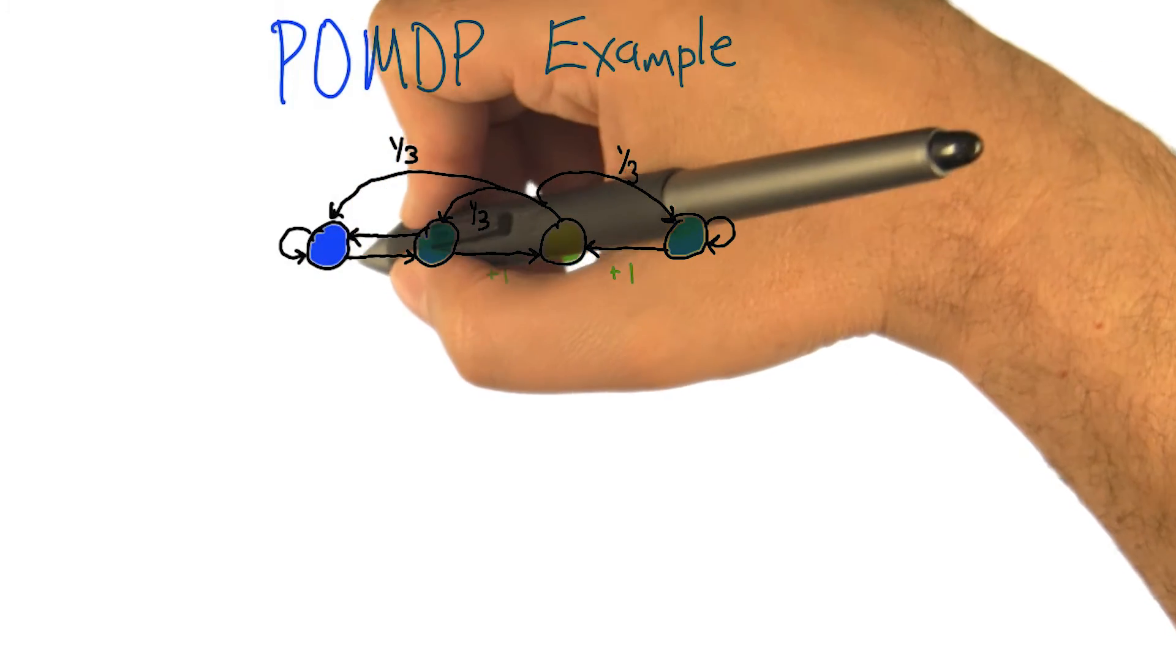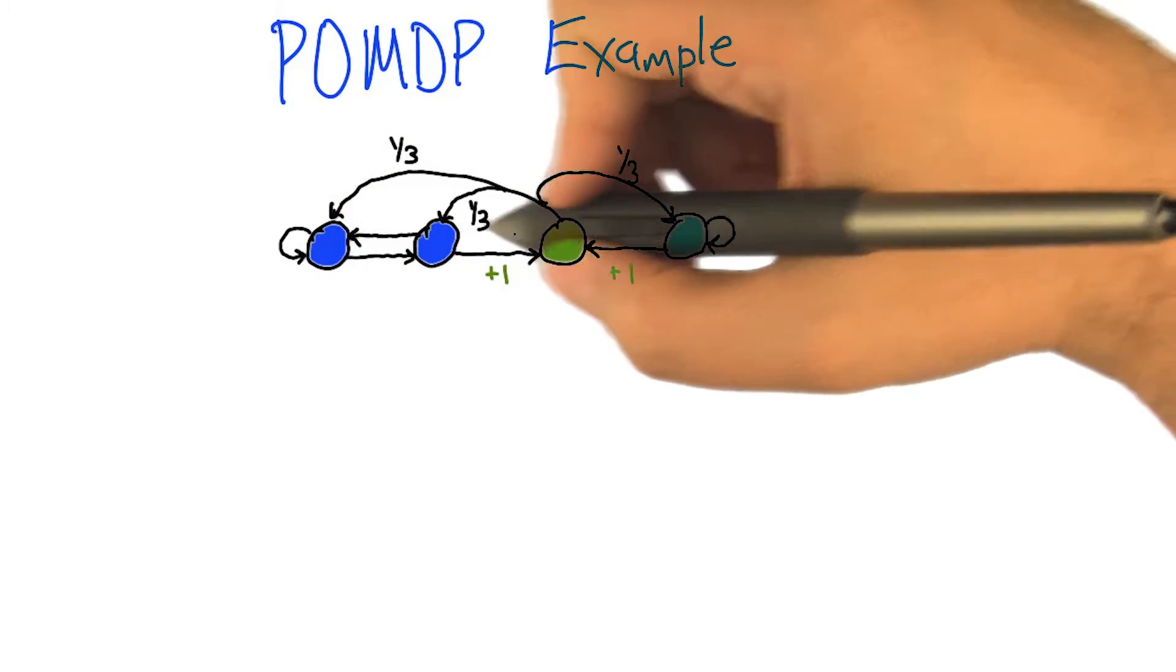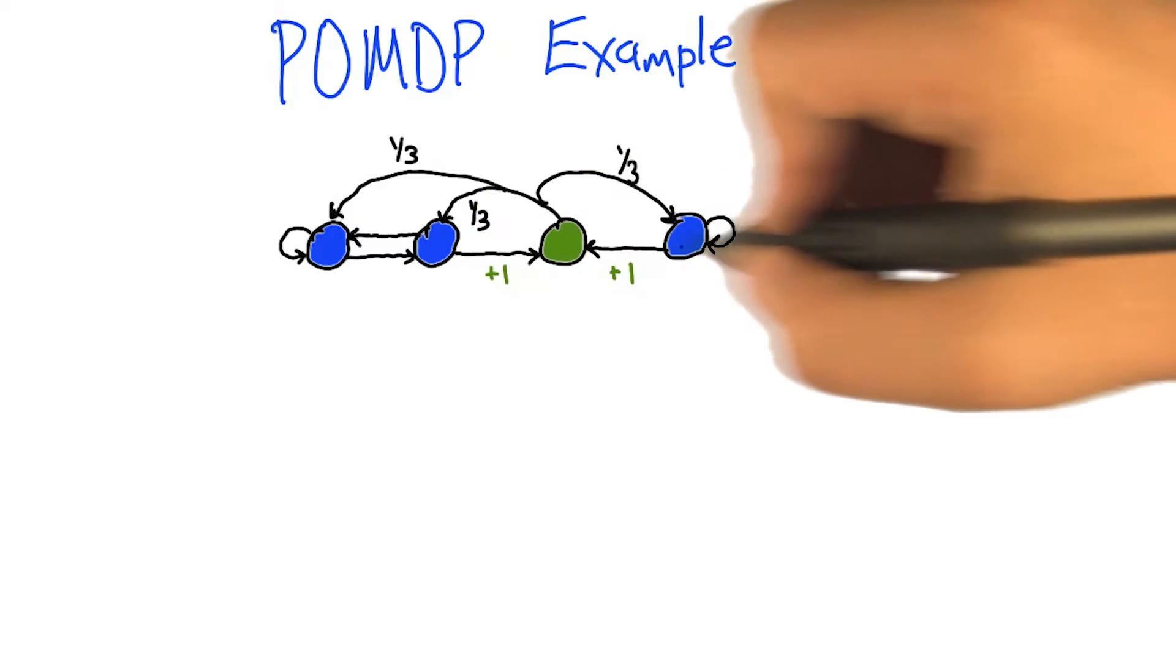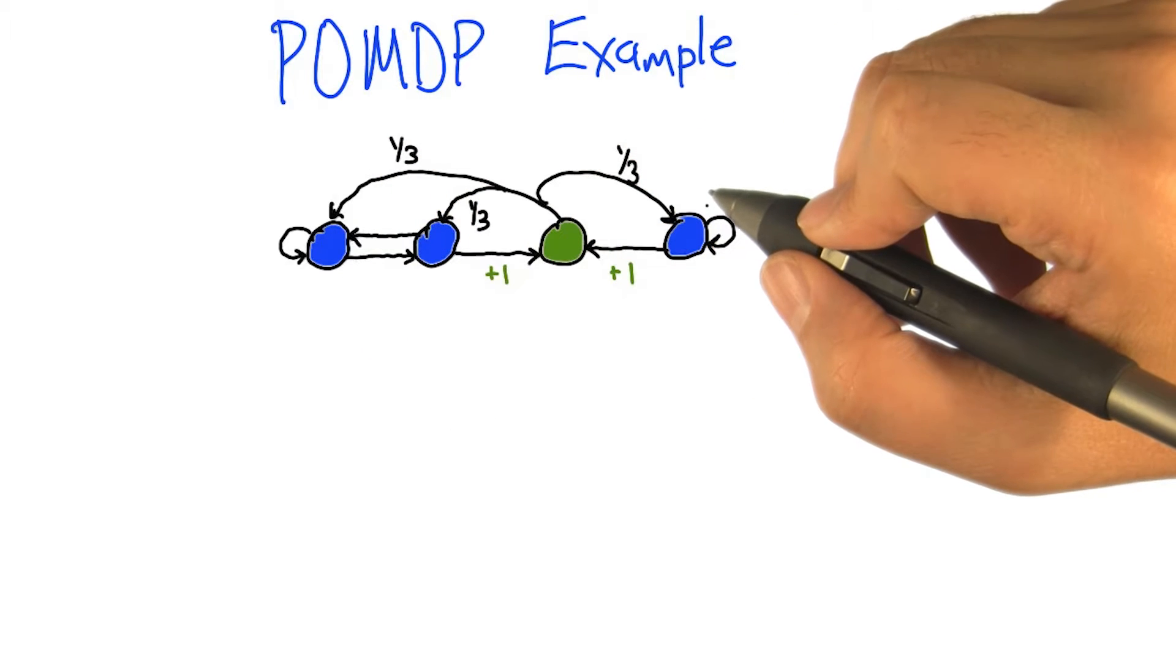And we've got two actions. The actions essentially move the agent left and right along this kind of hallway type thing with some exceptions.